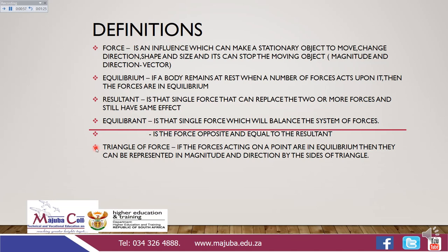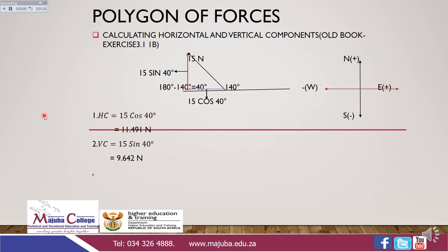If the forces acting on a point are in equilibrium, then they can be represented in magnitude and direction by the sides of the triangle. Let's take the workout for polygons of forces. This workout is from the book by G. Olivia, exercise 3.1, number 1b.